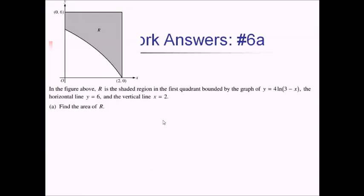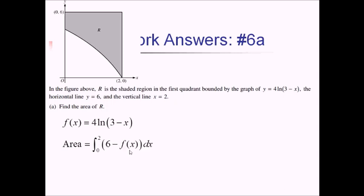On this free response calculator-based problem, we've got region R bounded by the graph of 4 ln of 3 minus x, plus a horizontal line and a vertical line. For the first part, we just want to find the area of R. I'm going to rename this function as f of x. For the area, going from left to right, it's top function minus bottom function: integral from 0 to 2 of 6 minus f of x, dx. Let me use the calculator for this.